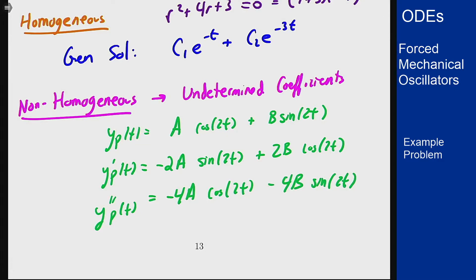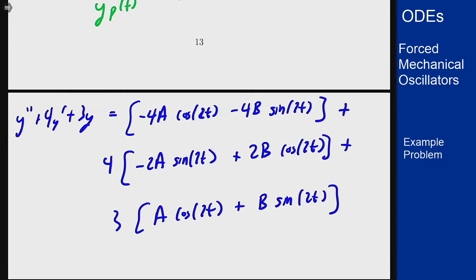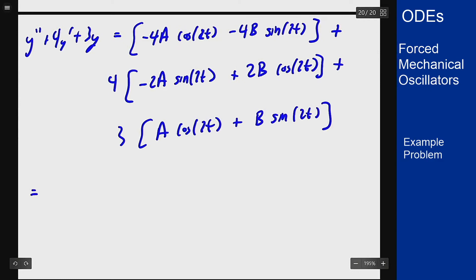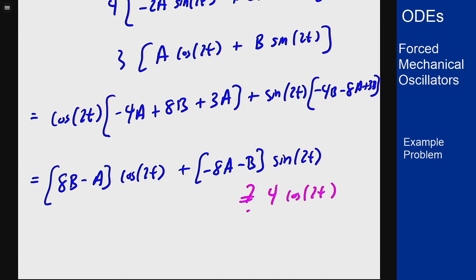We plug the derivatives into the original equation, y double prime plus 4y prime plus 3y to give us an expression. Regrouping terms based on the trig function they're attached to, we get cosine of 2t times negative a plus 8b plus 3a and sine of 2t times negative 8a minus b. We want this to match 4 cosine of 2t, which means we need to solve these two equations.